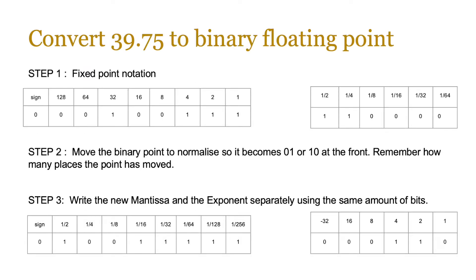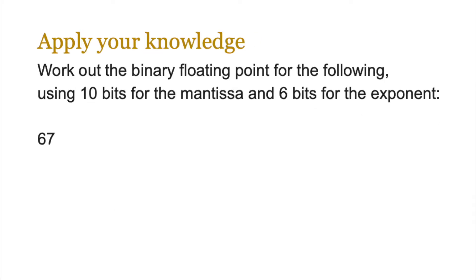Here's another view of the same process: 39.75 to binary floating-point. We use fixed-point notation - 39 becomes 32 plus 4 plus 2 plus 1, and 0.75 is a half and a quarter. Now we move the point to normalize it so it should become 01 or 10 at the front, and we count how many places the point needs to be moved - in our case 6 places - so the exponent becomes 6. We write the new mantissa and exponent separately using the allocated bits. Now try applying your knowledge by converting 67 into binary floating-point using 10 bits for the mantissa and 6 bits for the exponent. Pause the video and have a go.